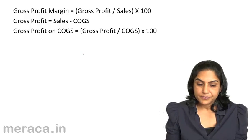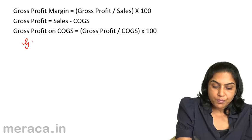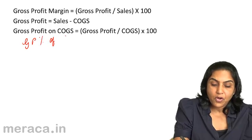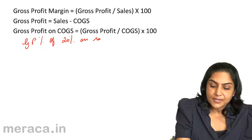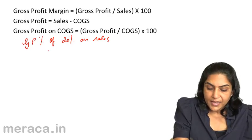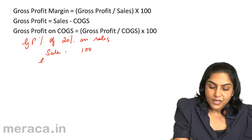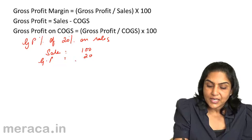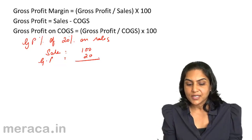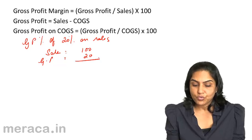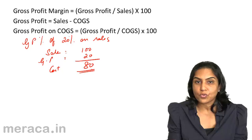Let us take an example. Let us consider a gross profit margin of 20% on sales. This would mean that if sales is equal to 100, gross profit is equal to 20. Since GP margin is 20% on sales, sales is 100, GP is 20, and cost of goods sold is 80.